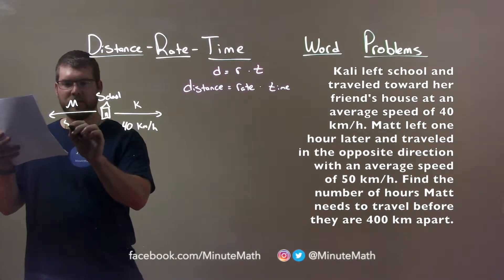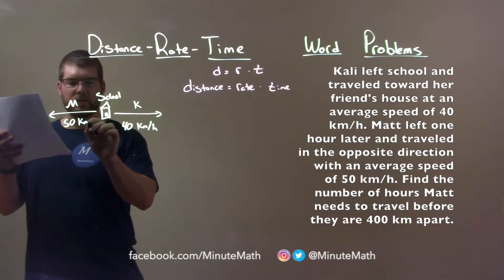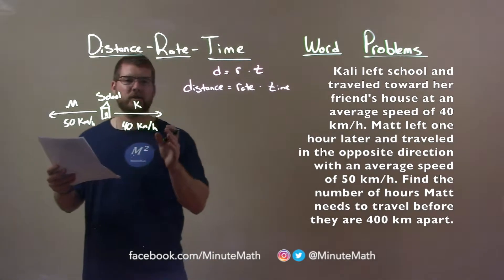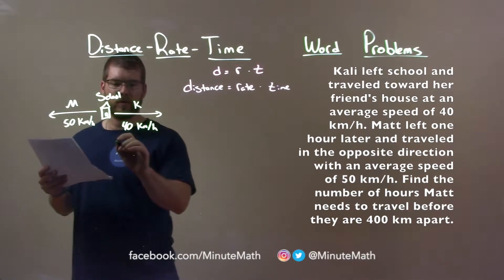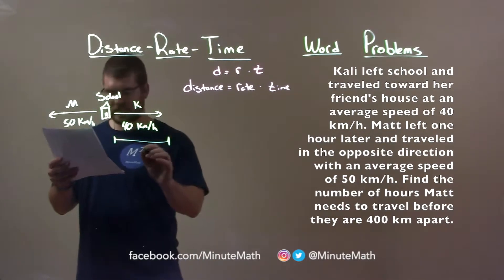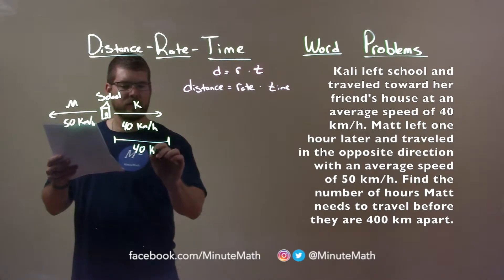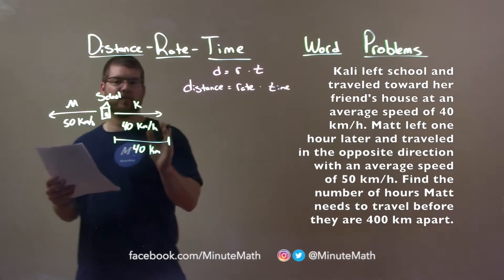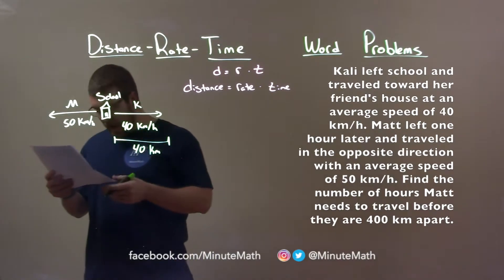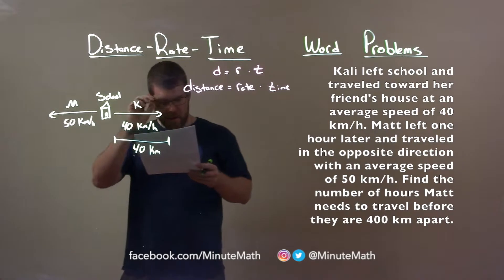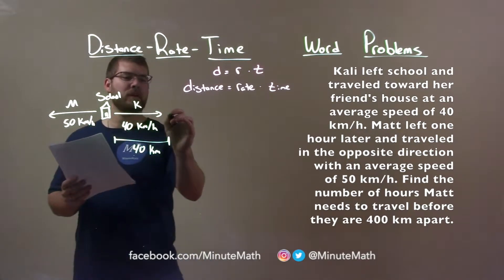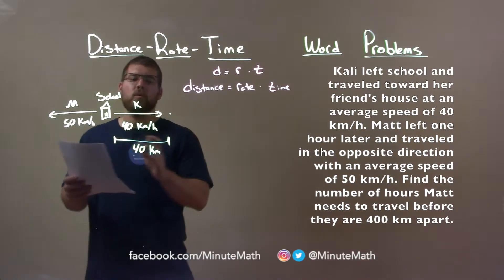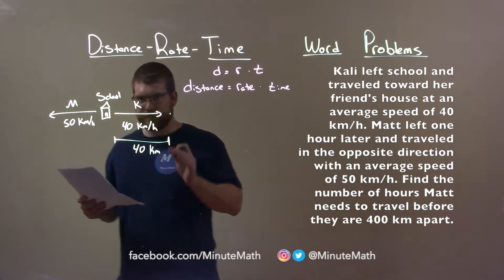Matt's traveling at 50 kilometers per hour, okay? But the key thing I said, Kali had already traveled one hour. So she traveled a distance of 40 kilometers in that one hour. She traveled 40 kilometers before Matt started going in the opposite direction, okay? So that means at this point of time, after one hour has occurred, they are 40 kilometers apart, okay?